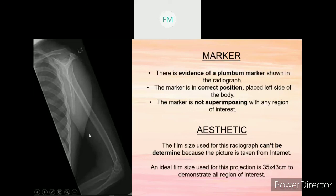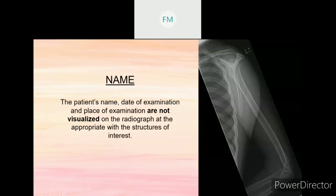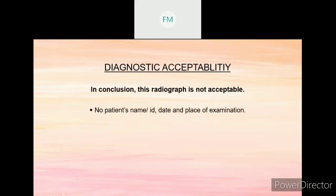For aesthetics: the film size used for this radiograph cannot be determined because the picture is taken from the internet. But an ideal size for this projection is 35×43 cm to demonstrate all regions of interest. For patient information: the patient name, date of examination, and place of examination are not visualized on the radiograph at the appropriate location. In conclusion, for diagnostic acceptability, this radiograph cannot be accepted because there is no patient name, ID, date, and place of examination. This radiograph also requires a repeat, and the patient name and ID must be included on the radiograph.